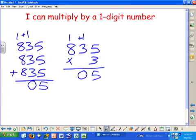8 plus 8 plus 8 is 24, plus 1 is 25. 8 times 3 is 24, plus 1 is 25.